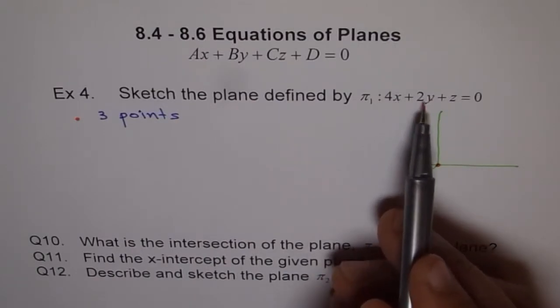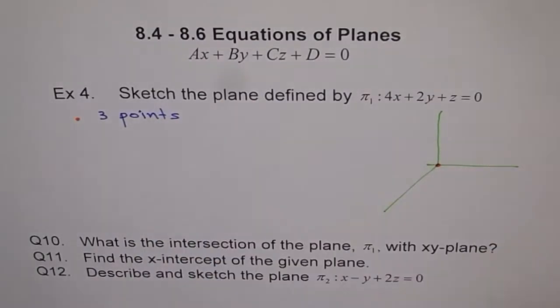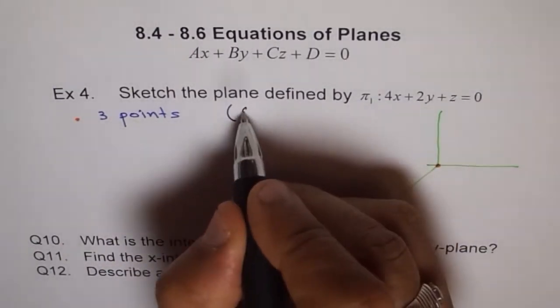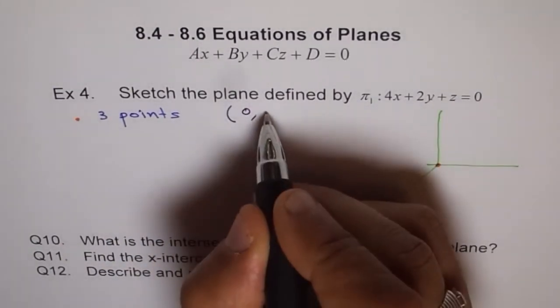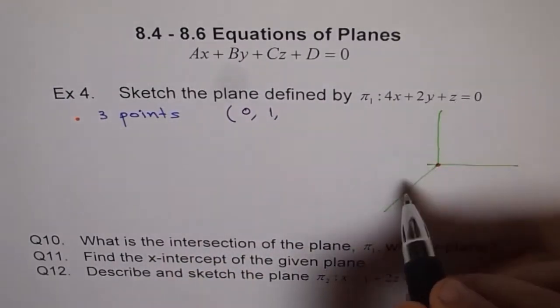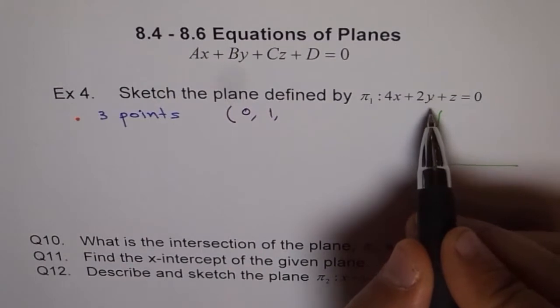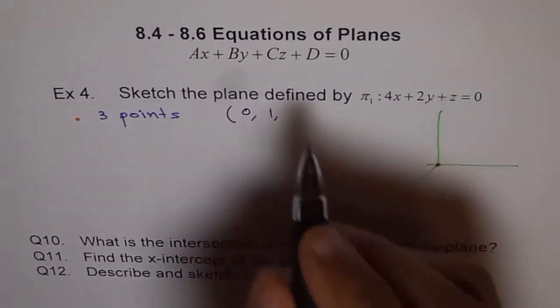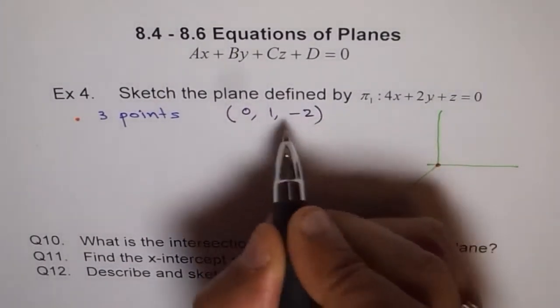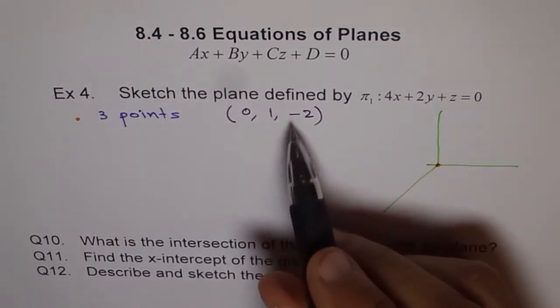How about 0 and 1? So, if I write, for example, x, let's consider this point. x is 0 and y is 1. Then, what will be the value of z? If this is 0, 4 times 0 is 0. y is 1. That means 2 times 1 is 2. So, z will be minus 2. So, that is our point. So, let's draw this point.